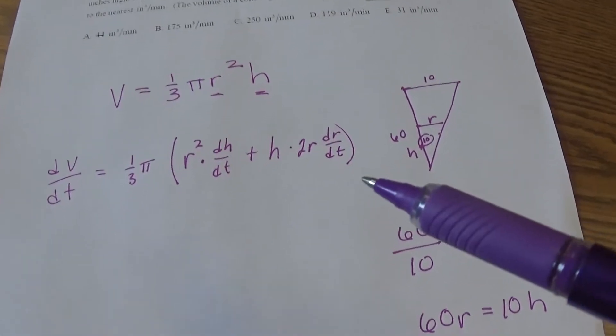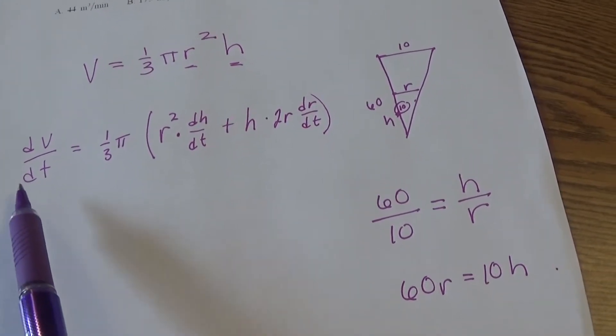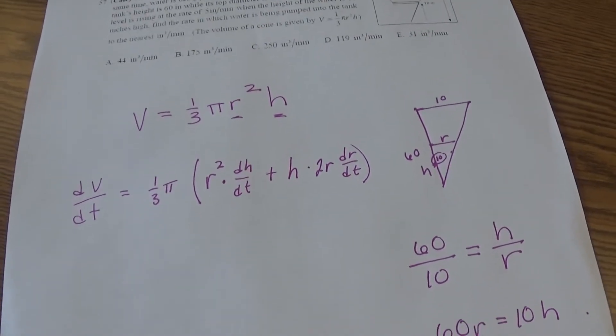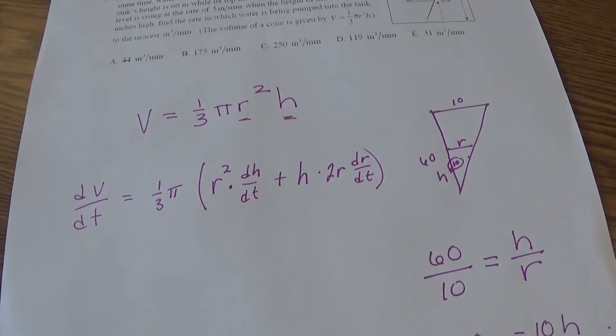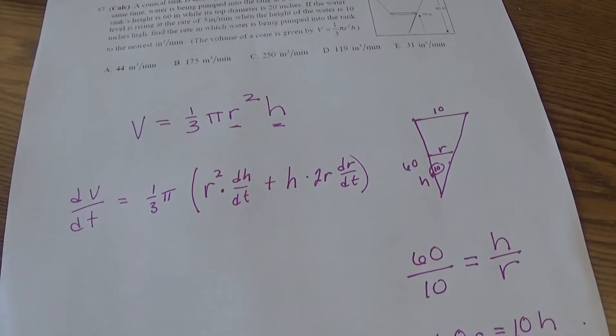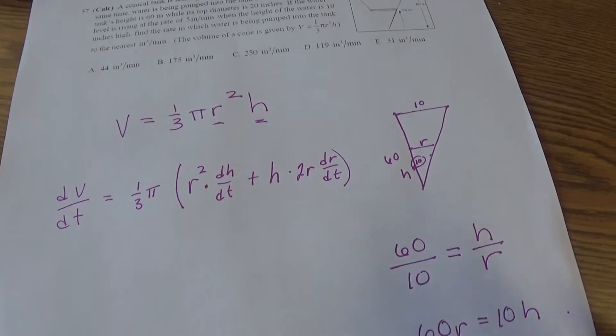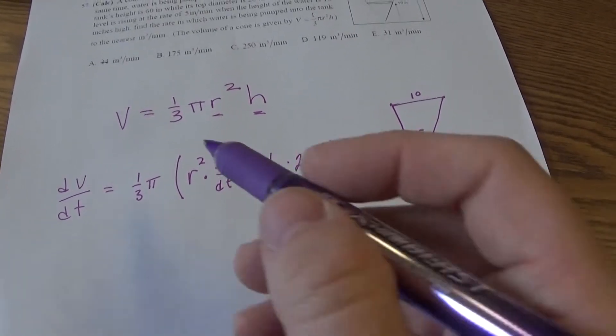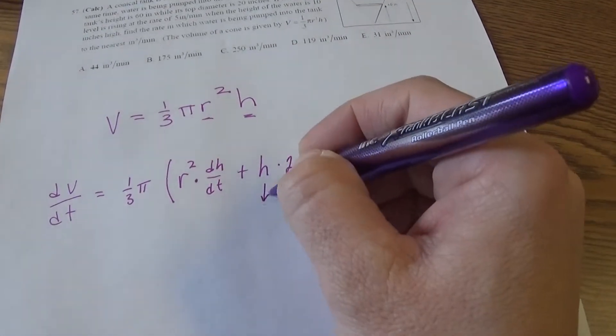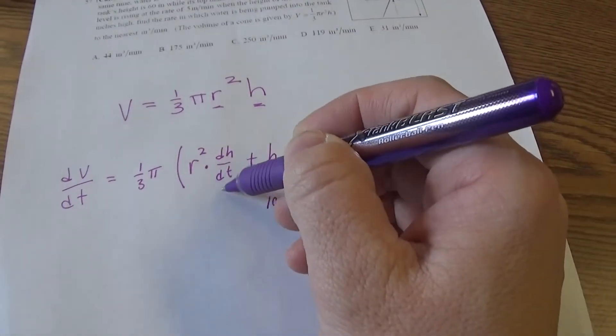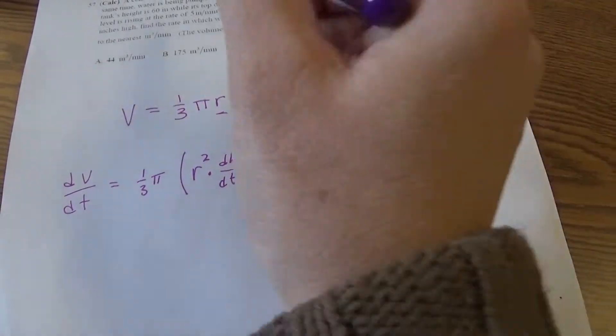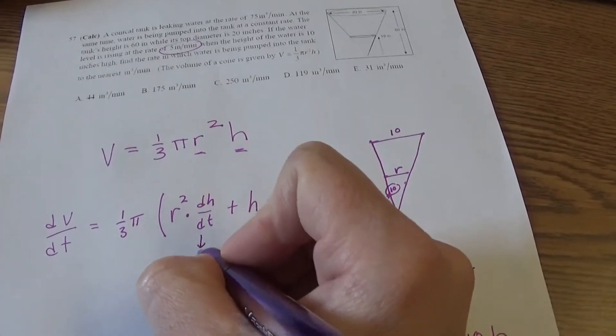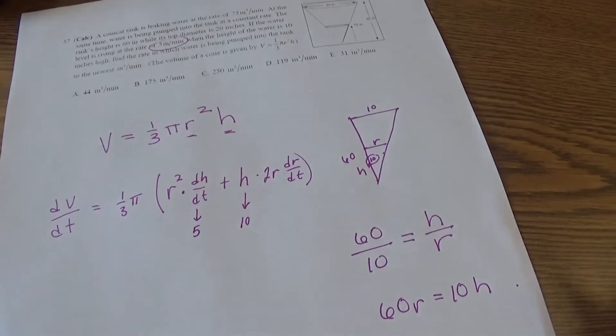So r squared dh/dt will be the derivative of h, plus h times 2r dr/dt. Right now I can plug in a few things. I'm actually trying to find dV/dt. I'm given this dV/dt, the 75, but that'll come in at the very end. What we're finding right now is the actual change in volume of the water each minute.